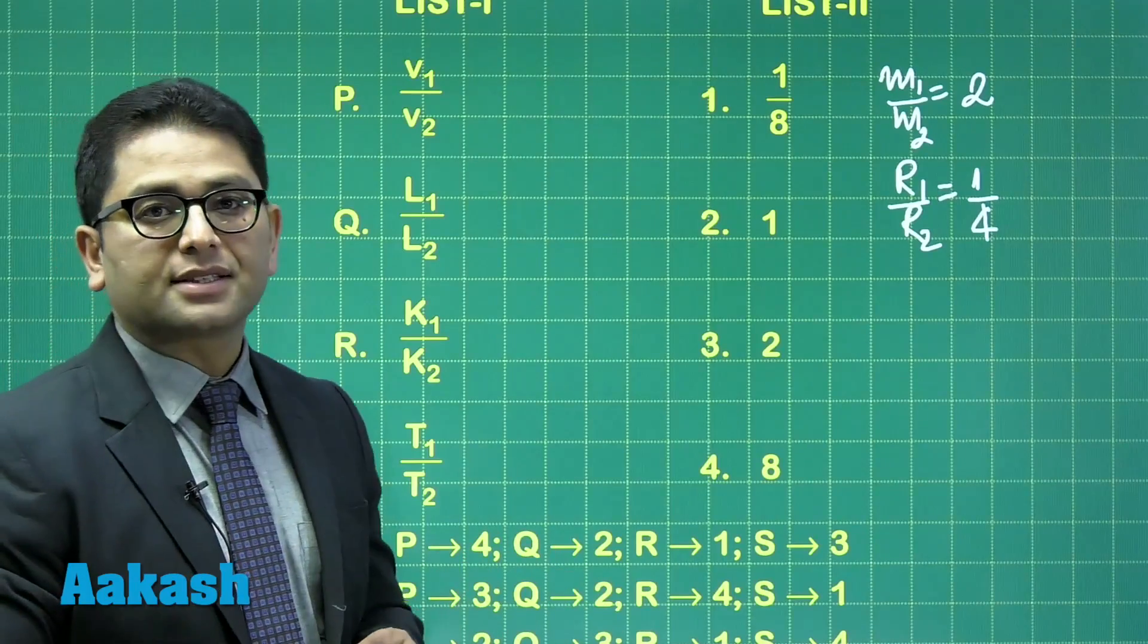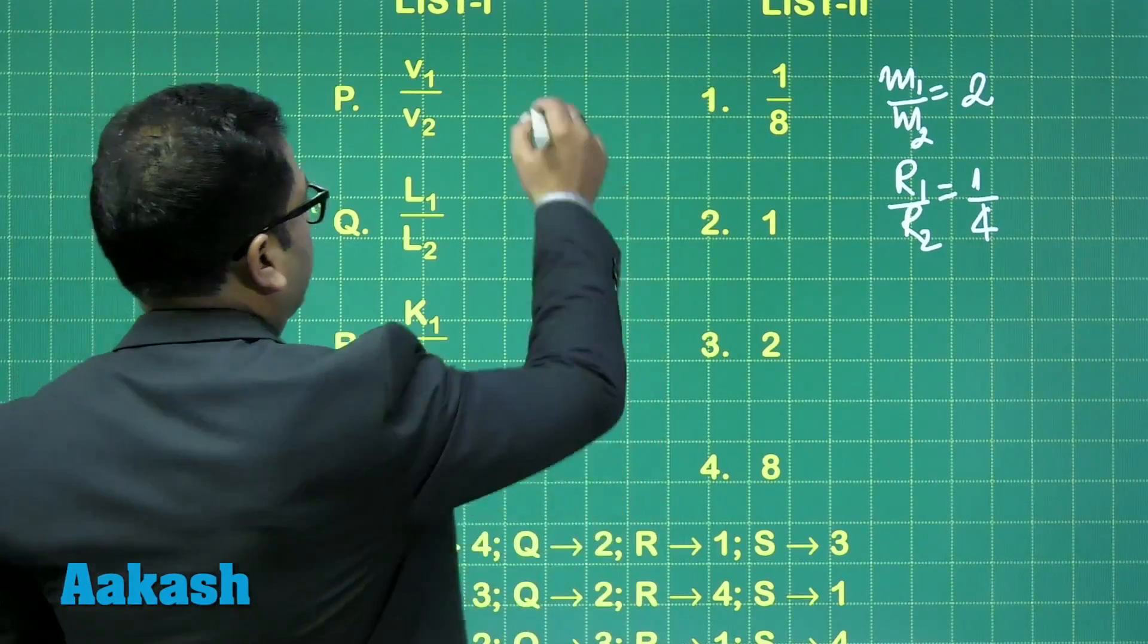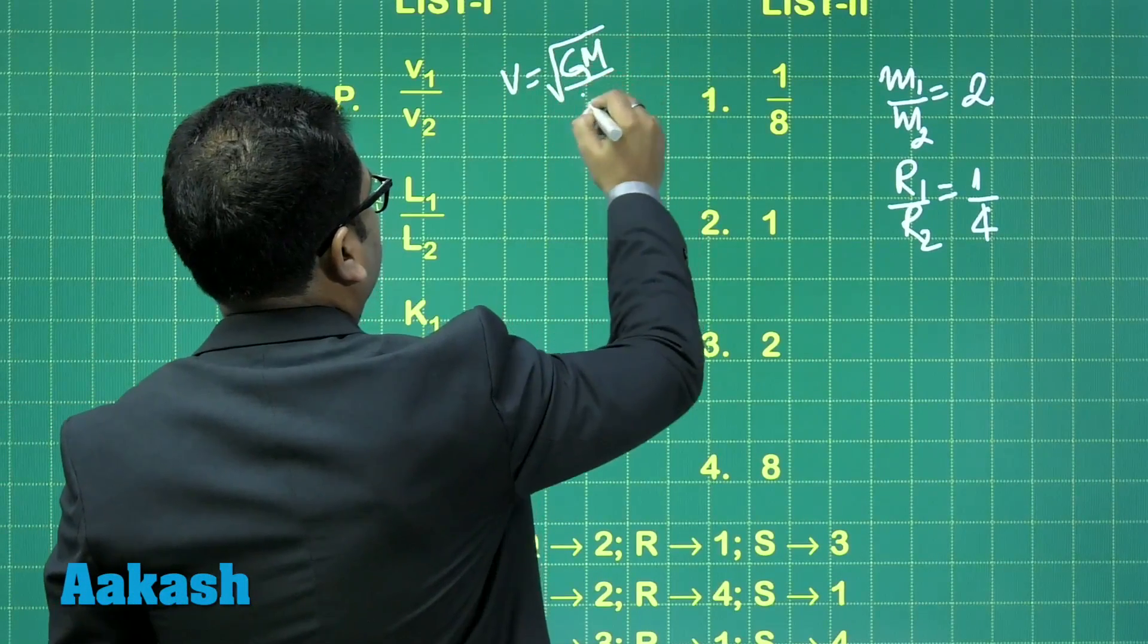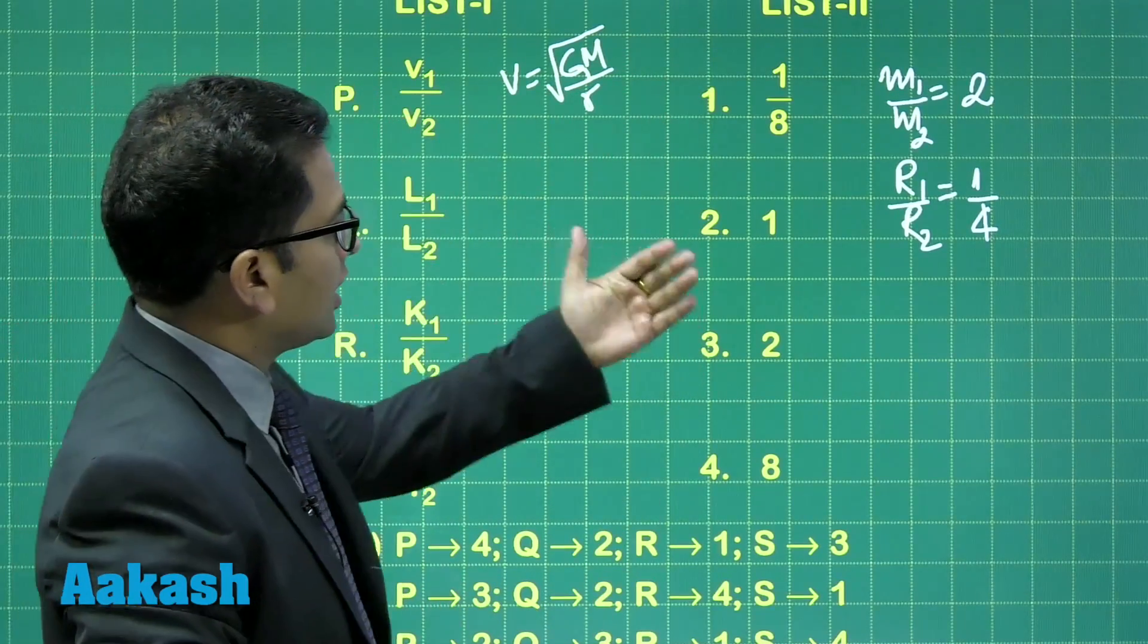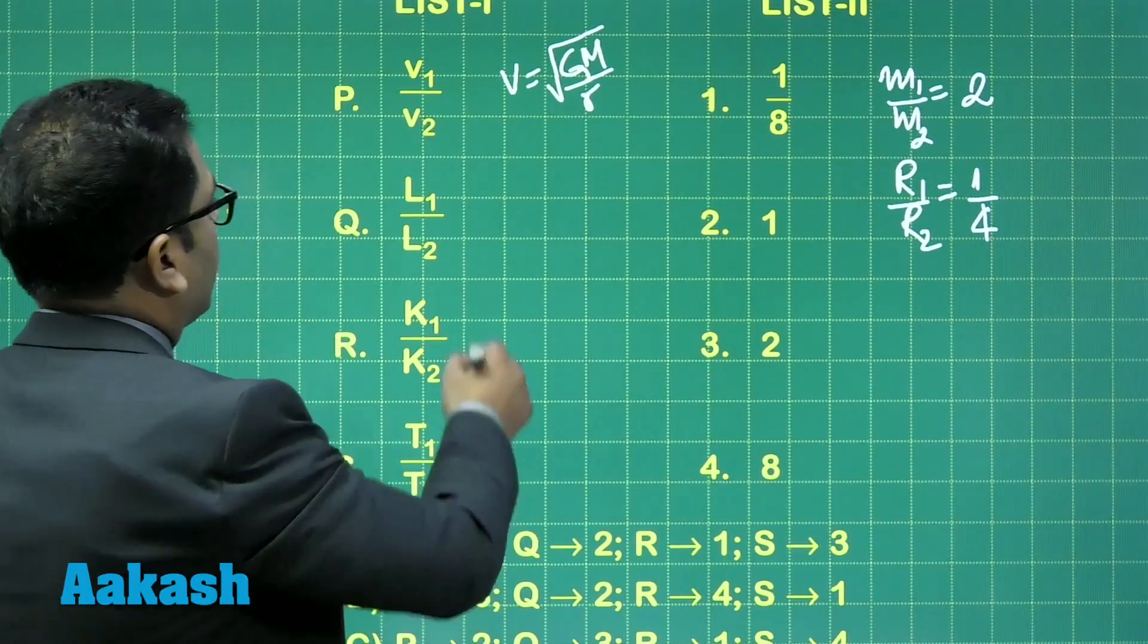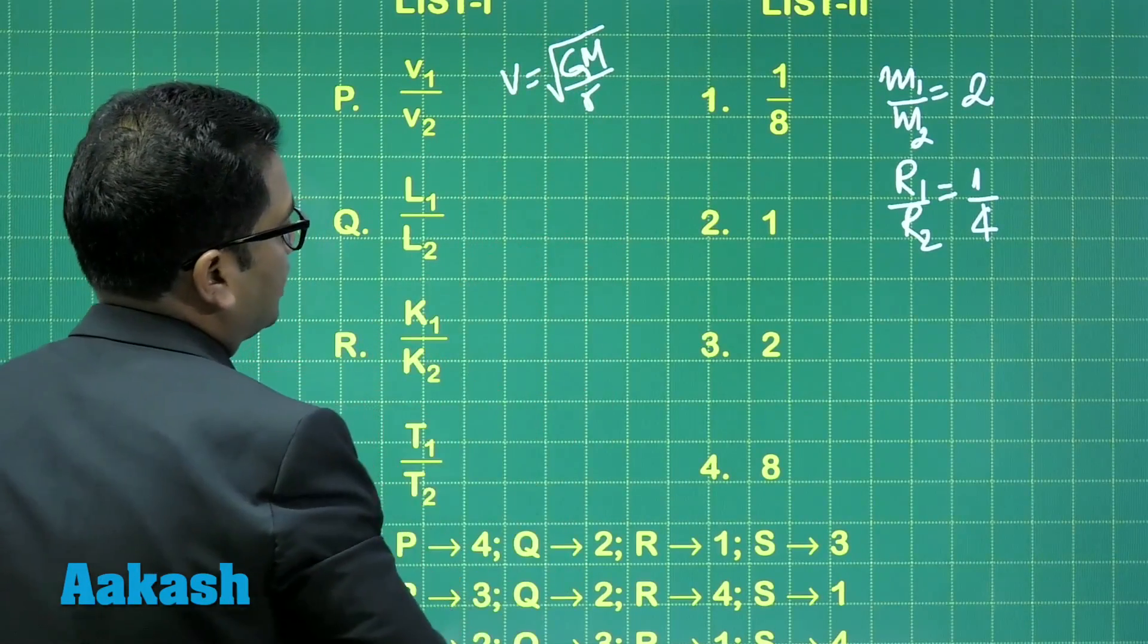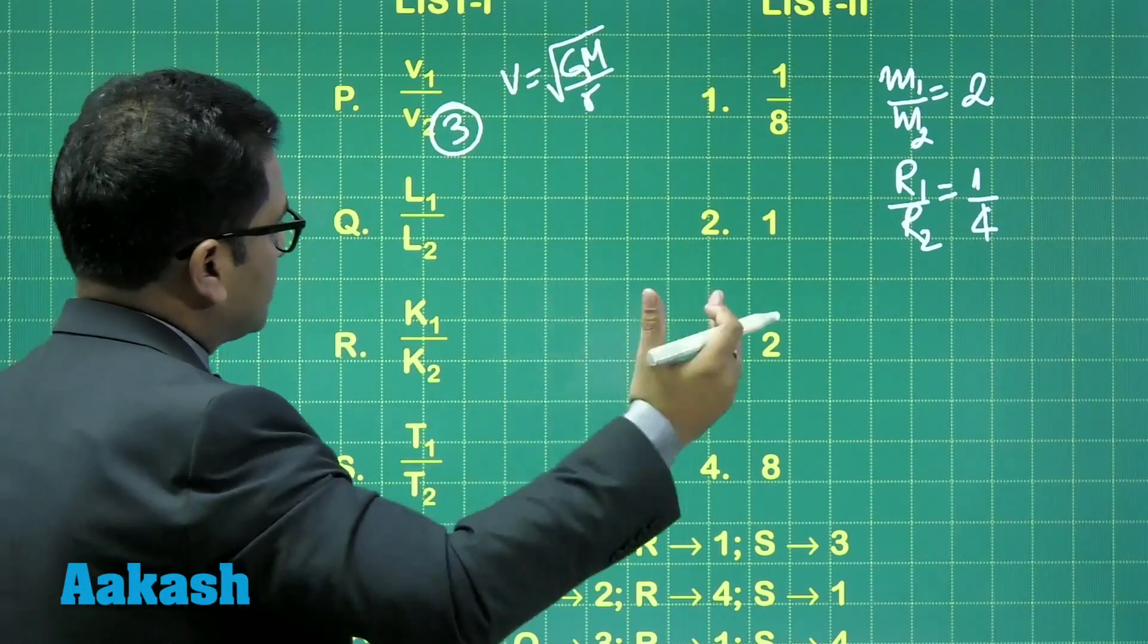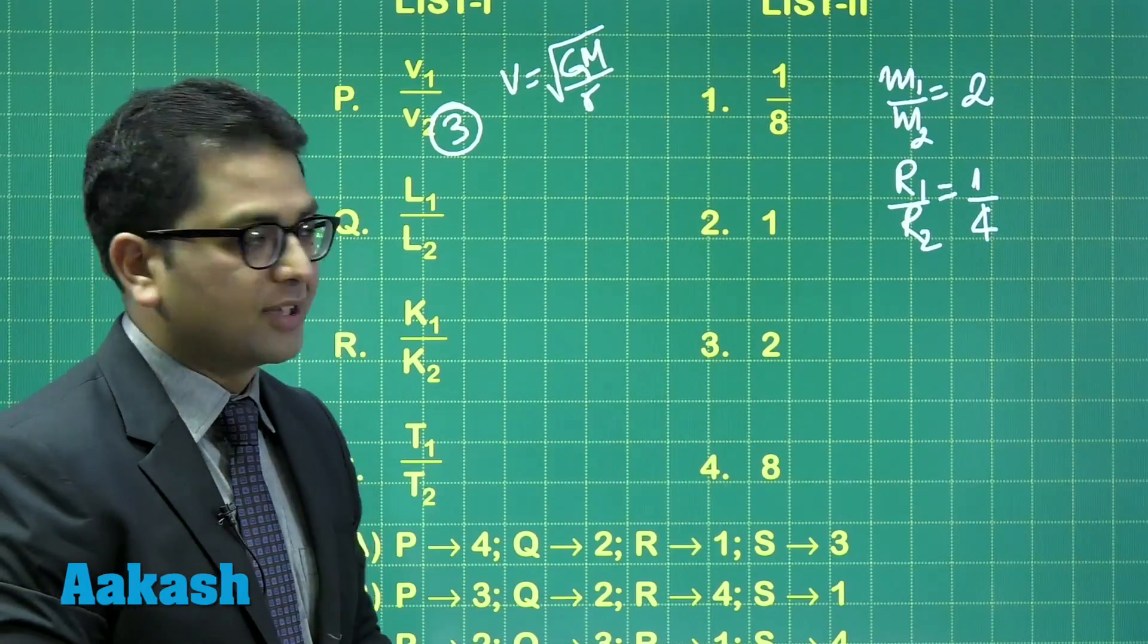Therefore, V1/V2 = √(R2/R1) = √4 = 2. So V1/V2 is 2:1, which corresponds to option 3 for P.